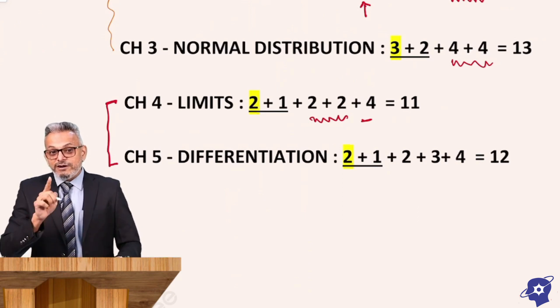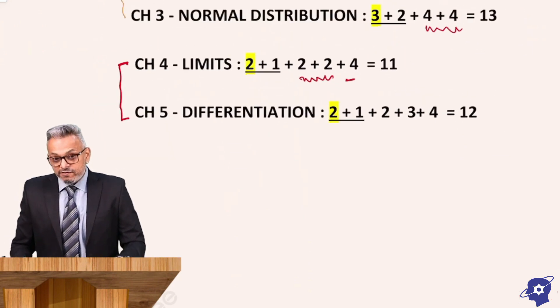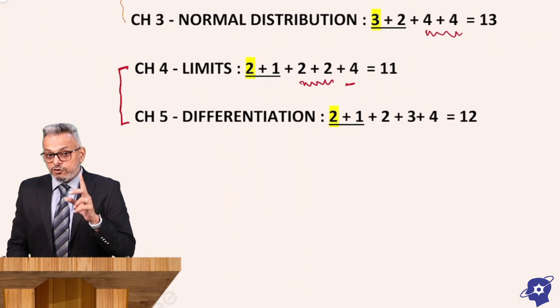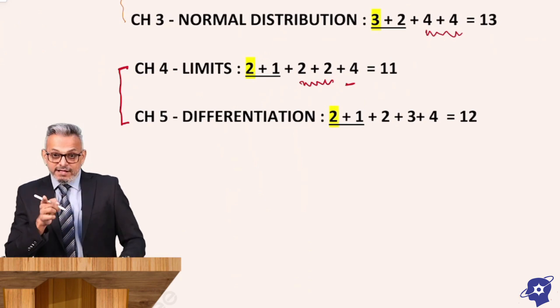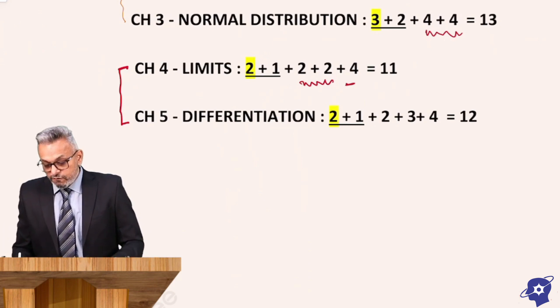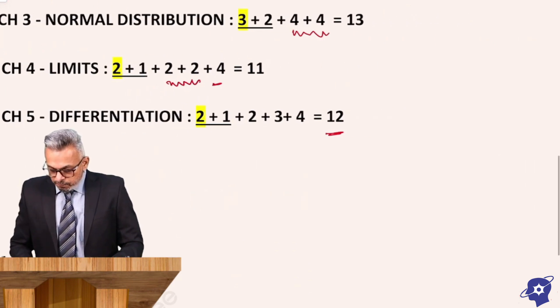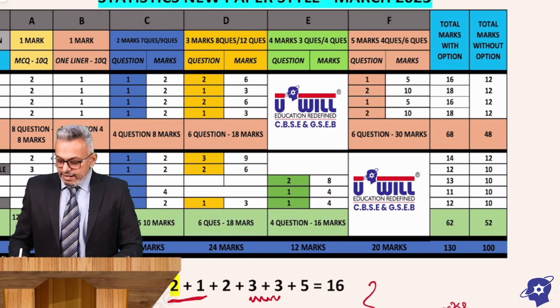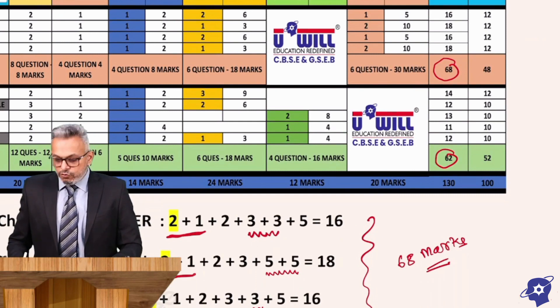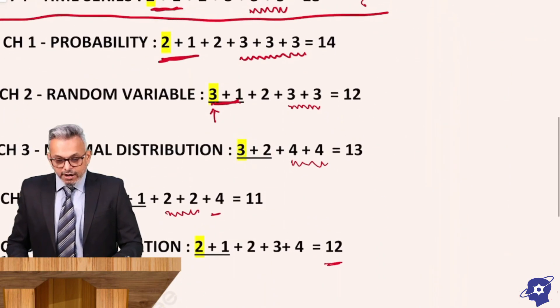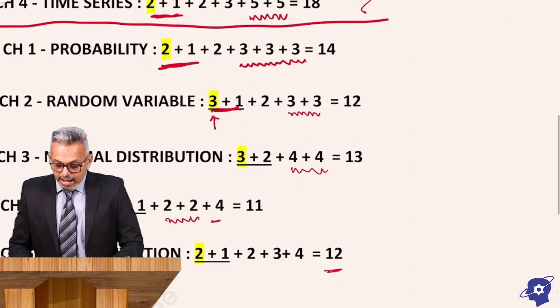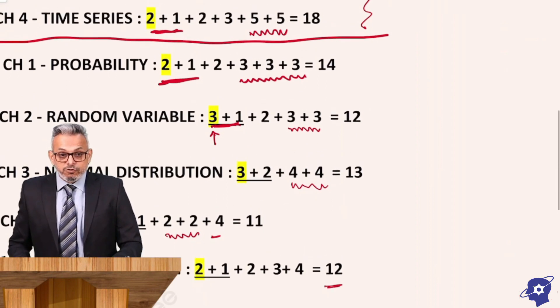Chapter number 5, the last chapter Differentiation. It is again 2 marks plus 1 mark plus 2 marks plus 3 plus 4. I hope by now you have understood that 2 + 1 is 2 marks MCQ, 1 mark one liner, plus 2 marks single question plus 3 plus 4. So this is how the breakup of differentiation is, which is of total 12 marks. We can see over here on the screen that 68 marks is for part 1 and 62 marks is for part 2. So total comes to 130.